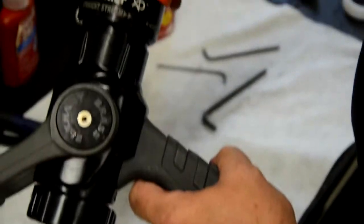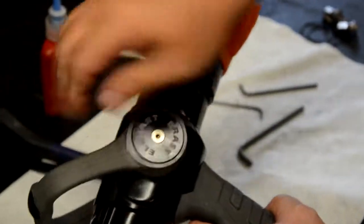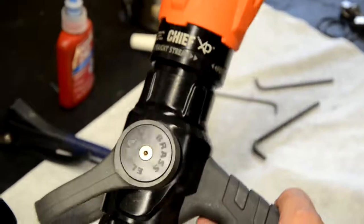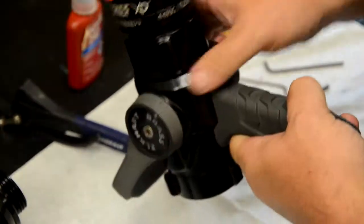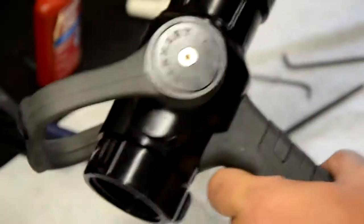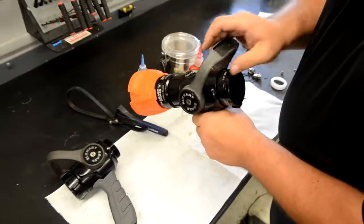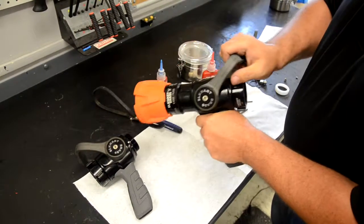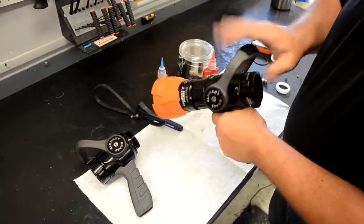Now we can wipe off any excess Loctite or grease that may have occurred during installation. We recommend a mild citrus degreaser for this process. Check that the bale handle operates smoothly one last time. And finally, allow 24 hours for the Loctite or thread sealant to fully cure before use.